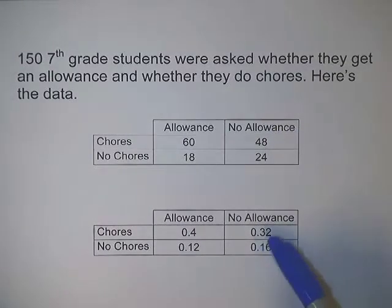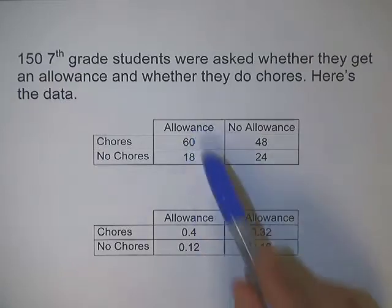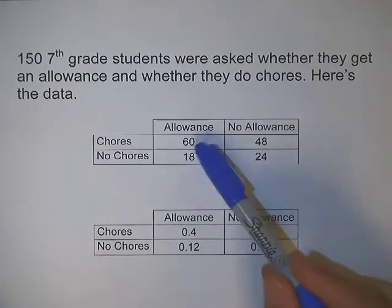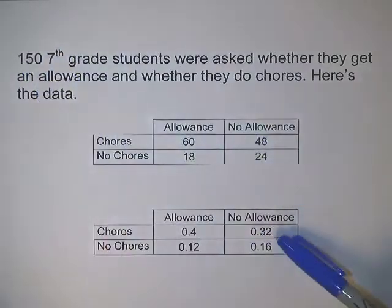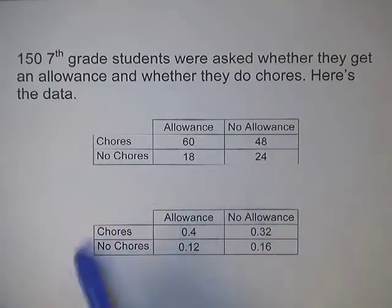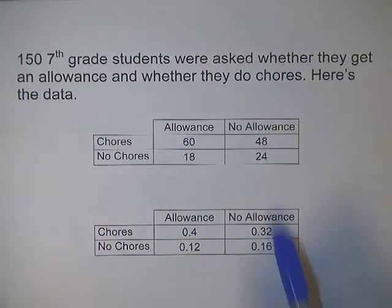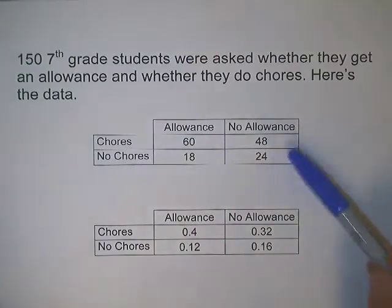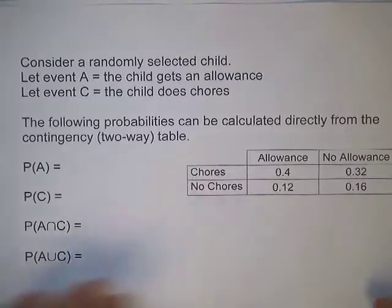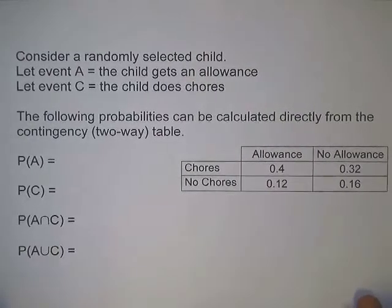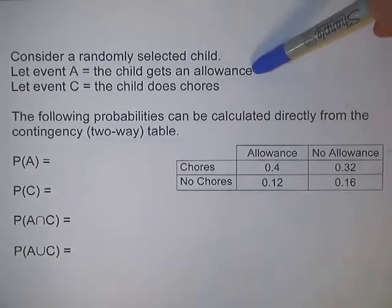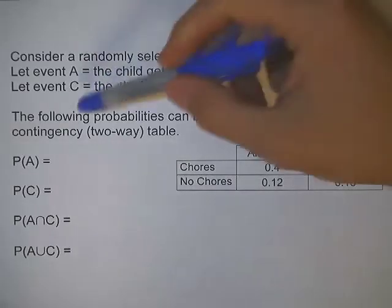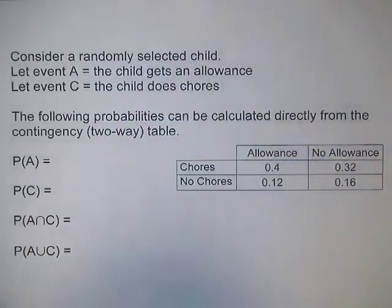I've also put down here all the probabilities that match up with these frequencies. So 60 out of 150 is 0.4, 48 out of 150 is 0.32. We're going to primarily use this probability version of the table. Let's assign some letters to simplify things: event A is the event that a child gets an allowance, and event C is the event that a child does chores.